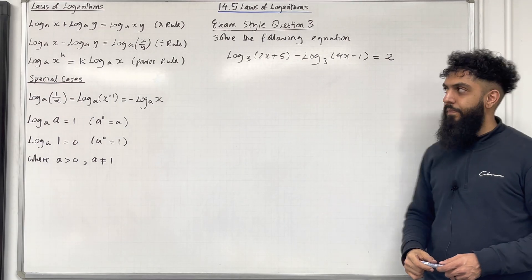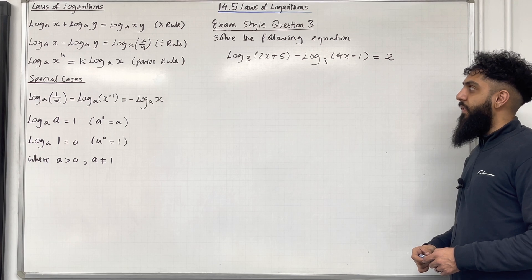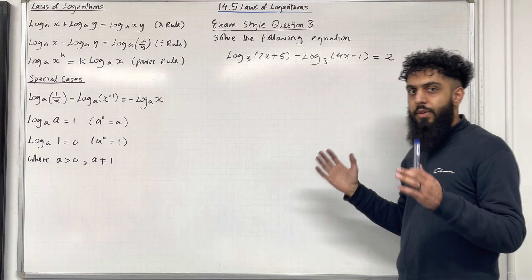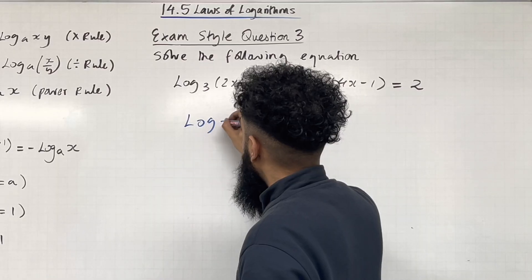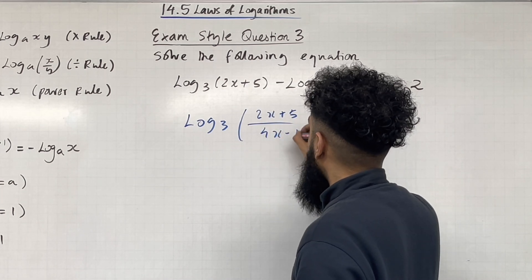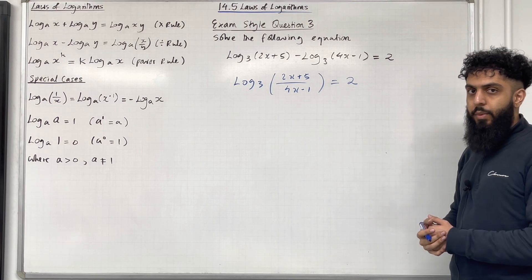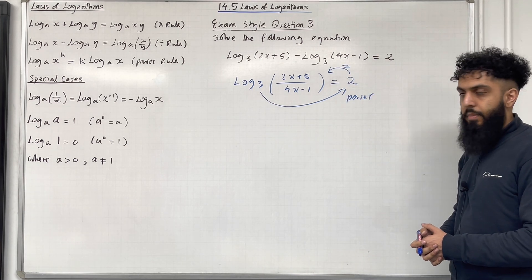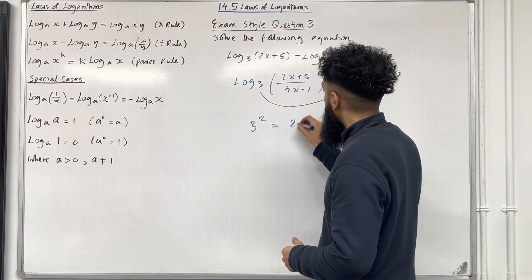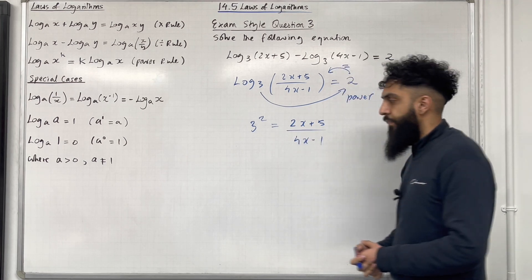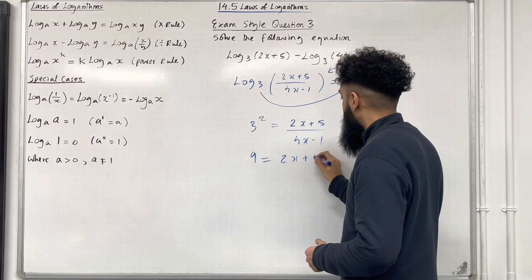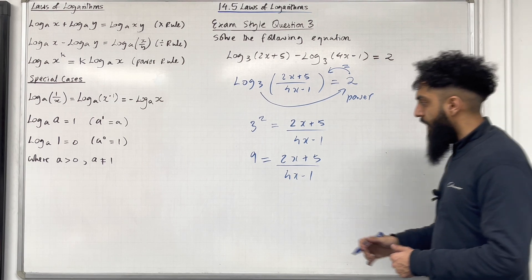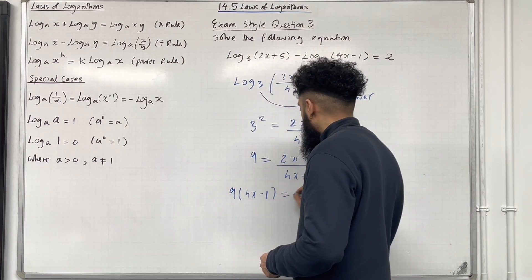Let's have a look at exam style question 3. Solve the following equation: log base 3 of (2x plus 5) minus log base 3 of (4x minus 1) equal 2. Both logarithms have the same base and since we're subtracting, we can apply the division rule to combine the logarithms. So we have log base 3 of (2x plus 5) divided by (4x minus 1) must equal 2. We can rewrite this equation: the base is 3, so 3 to the power 2 is equal to (2x plus 5) over (4x minus 1). 3 squared is 9, so we have 9 equal to (2x plus 5) over (4x minus 1). We can now multiply both sides by (4x minus 1), giving 9(4x minus 1) equal (2x plus 5).